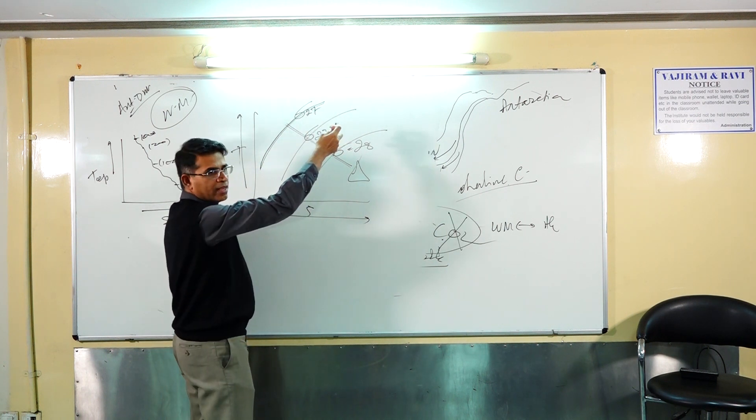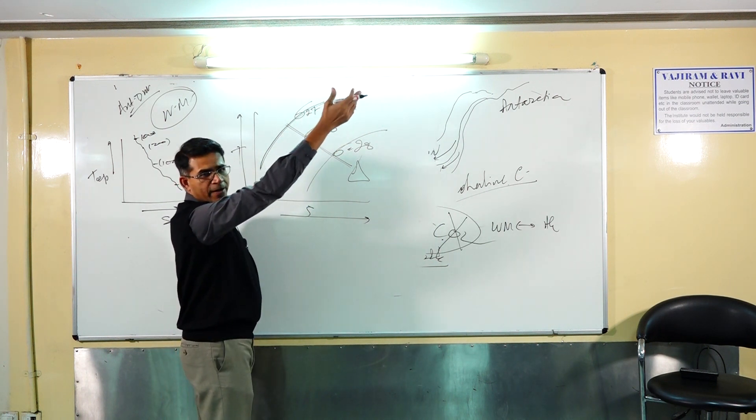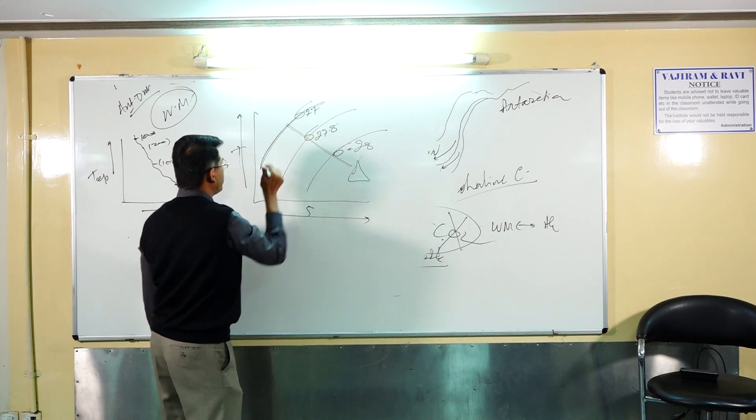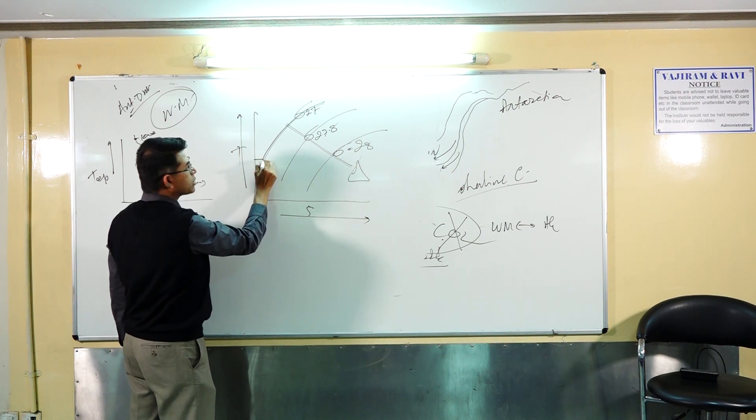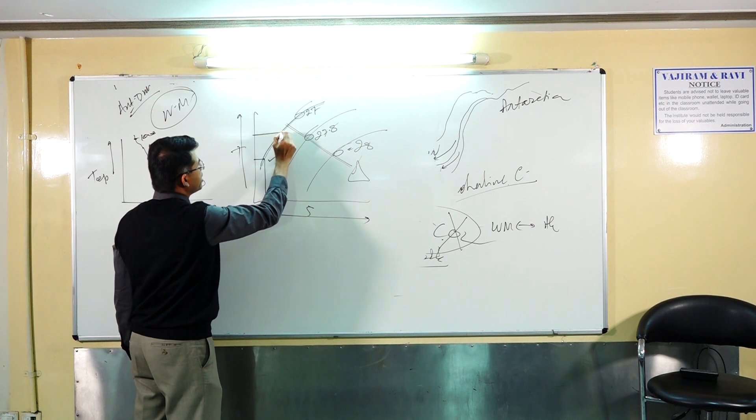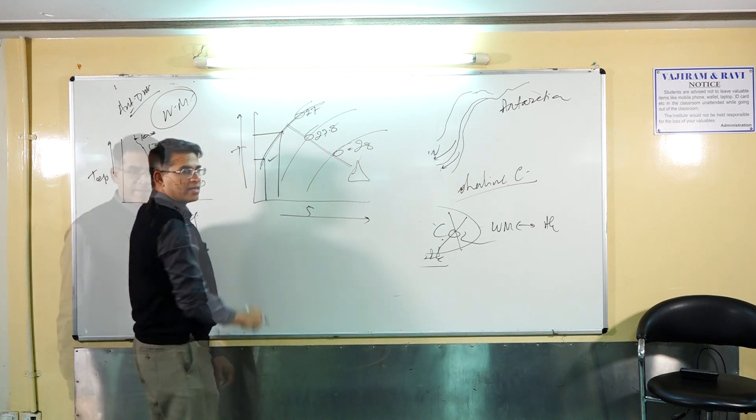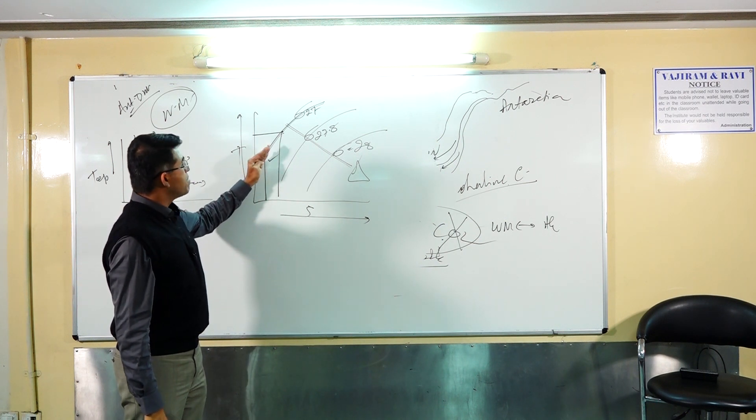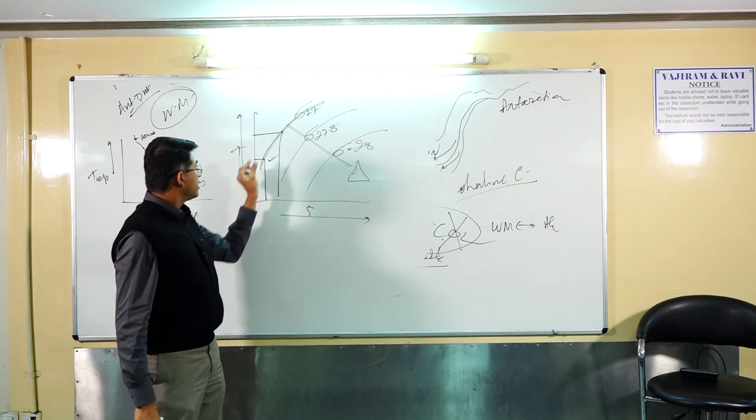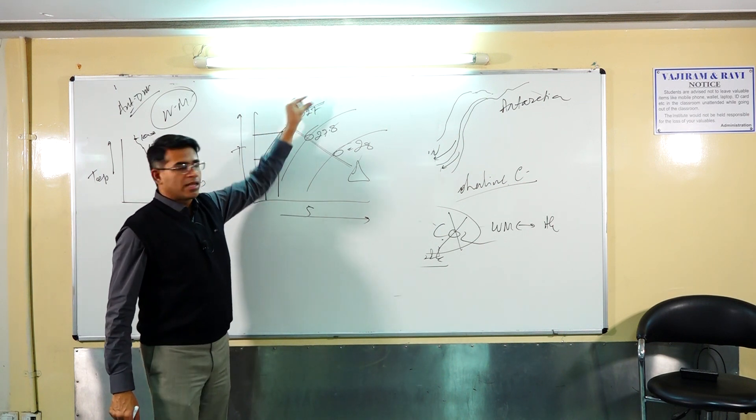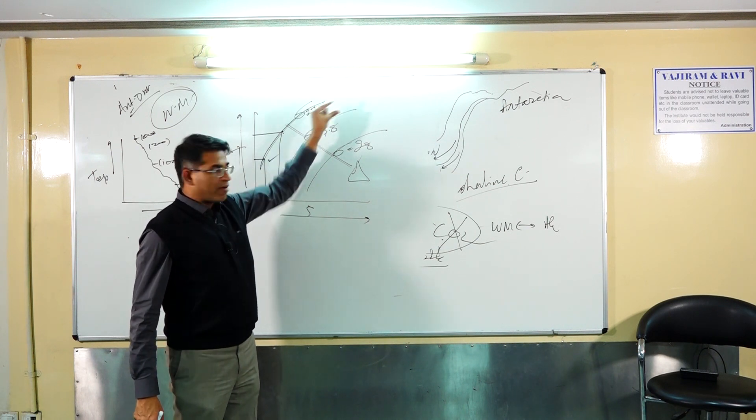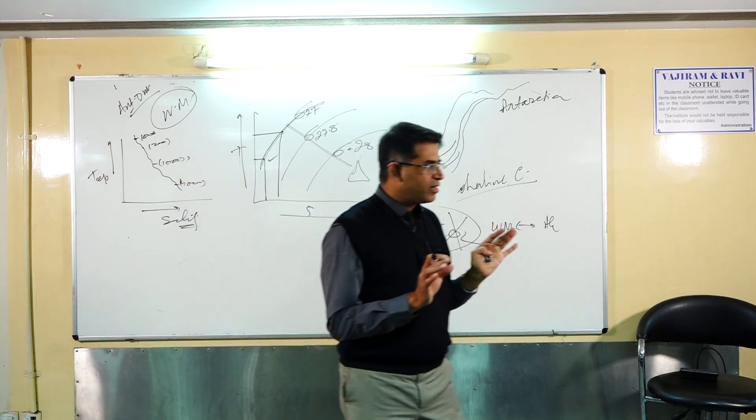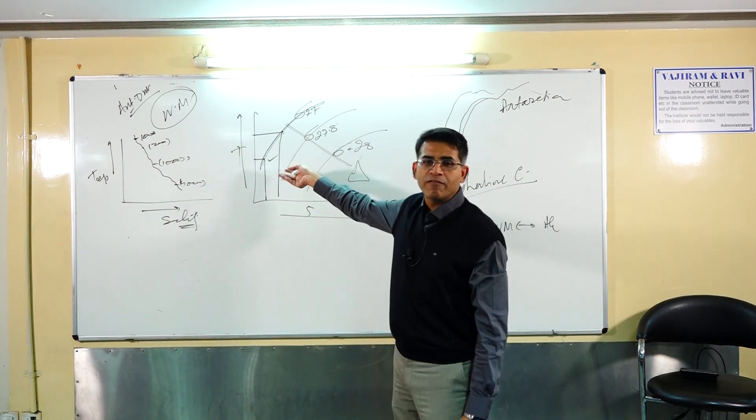As you come down the graph towards right hand bottom, it becomes more and more dense waters. Along this graph, sigma value ke matlab kya hai? This is density. This is 1.027. Which means, for the entire graph, the density is same. Temperature T1, salinity S1, same density. Temperature T2, salinity S2, same density. So along this graph, if I change T and S, I still get the same type of density. This can be one type of water mass. But densities are same, but T and S values are different.